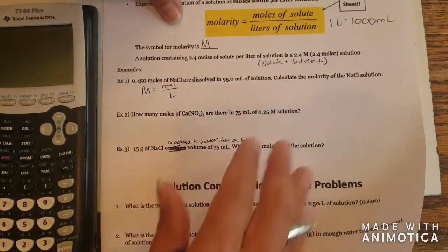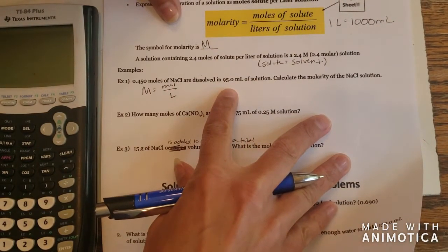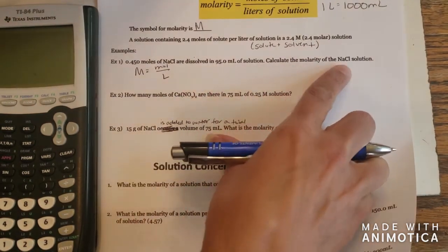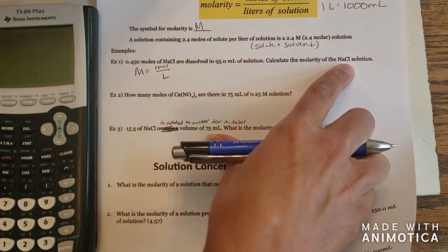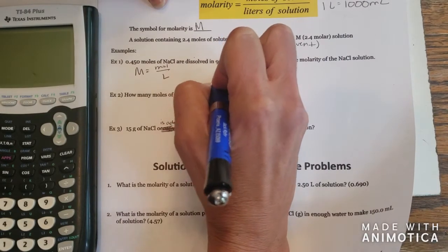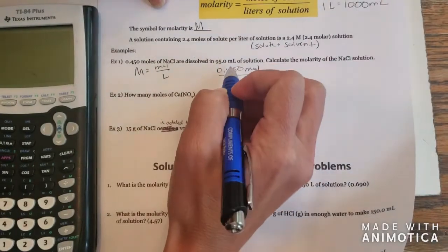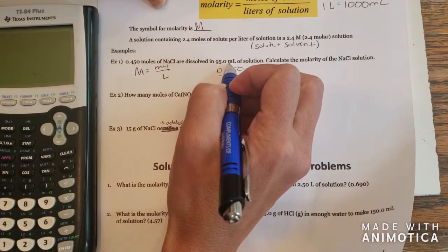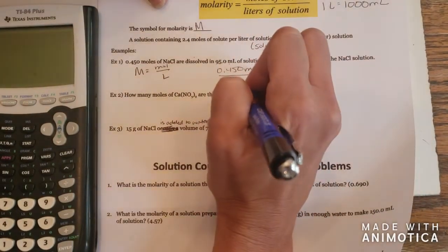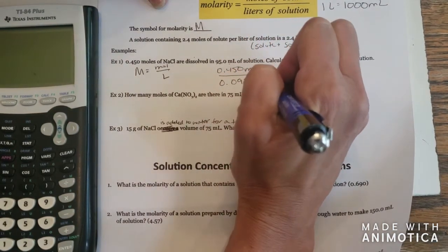So for example one, we have 0.450 moles of sodium chloride that are dissolved to make 95.0 milliliters of solution. And we're just going to calculate the concentration and molarity of the sodium chloride solution. So we're going to take 0.450 moles and divide it by the volume. Now you'll notice that this is in milliliters, so you need to divide this by a thousand and convert it into liters first. So 95.0 milliliters is 0.0950 liters.